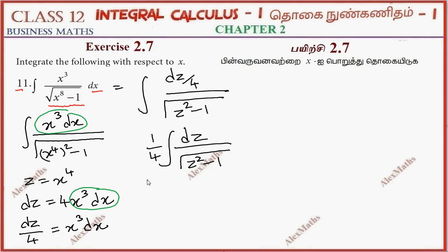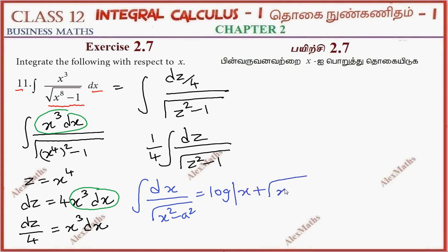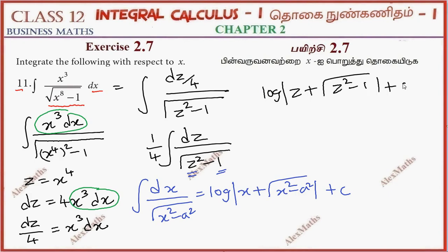The integral becomes (1/4) times the integral of dz divided by root of z² minus 1. Using the standard formula: integral of dx over root of x² minus a² equals log|x + √(x² - a²)| + C, where x is replaced by z and a equals 1, we get (1/4) log|z + √(z² - 1)| + C.